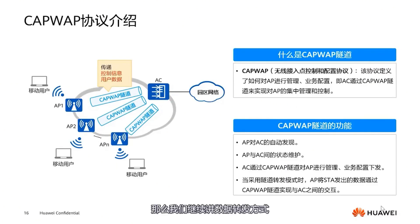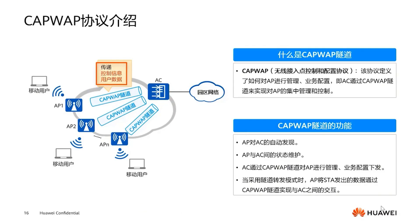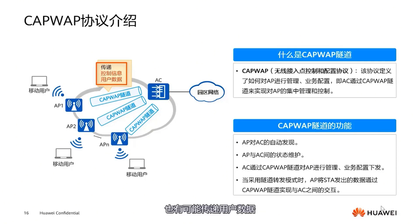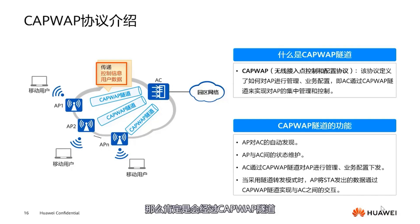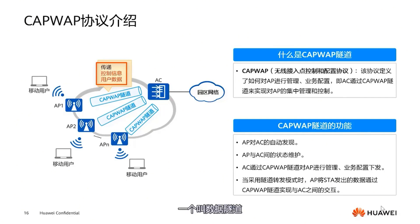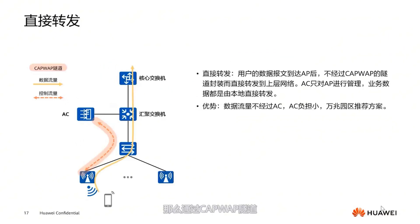Let's continue with data forwarding methods. Data forwarding involves the CAPWAP protocol, which carries both control information and user data. There might be control data transmitted between the AP and AC, like when the AC sends down configurations. It might also transmit user data, like when a mobile user connects to the AP to access the internet. The CAPWAP tunnel is divided into two types: a control tunnel and a data tunnel.